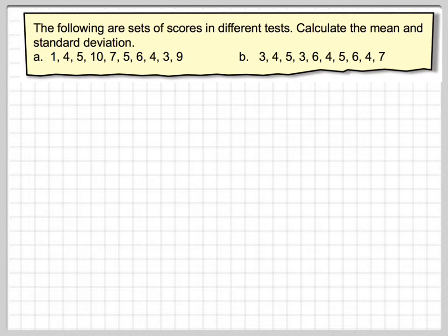The mean is an average. The standard deviation is a measurement of spread. Just looking at the data, we might think that one of the two sets of data is more spread out than the other.